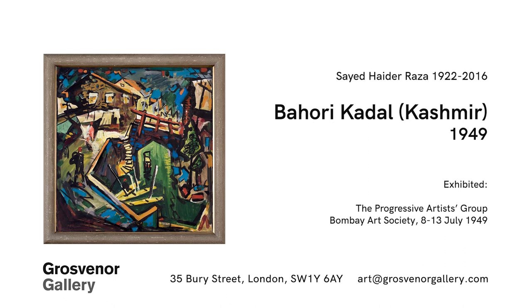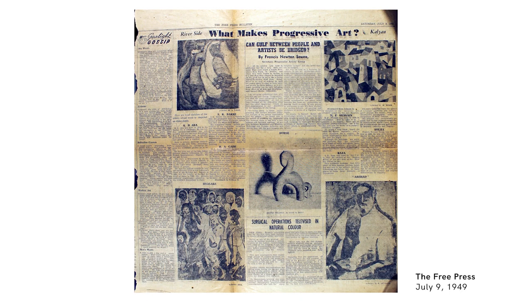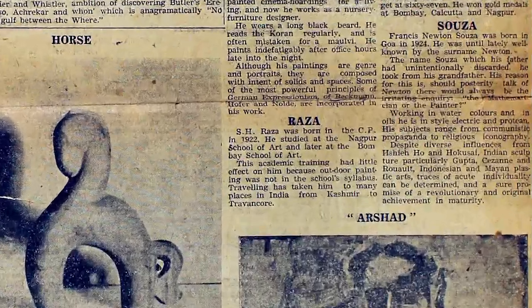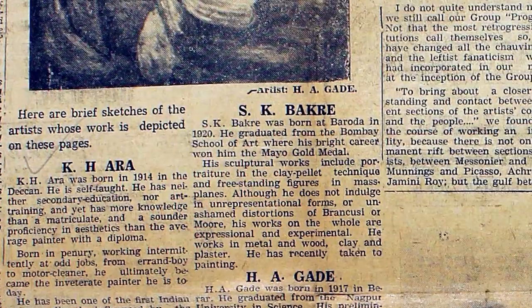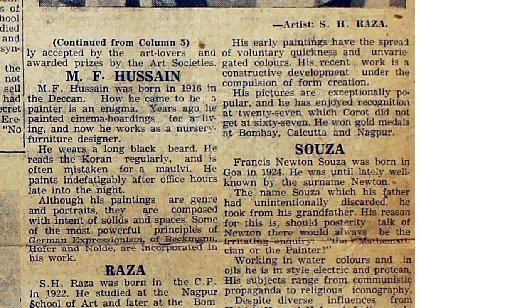This work by Indian artist Syed Haider Raza depicts a bridge and its surroundings in Kashmir. It was painted in 1949, two years after both Indian independence and the formation of the Progressive Artists Group, which initially consisted of six members: Raza, Ara, Bakre, Garde, Hussain, and Souza.